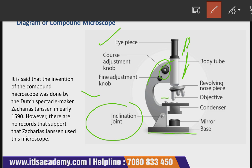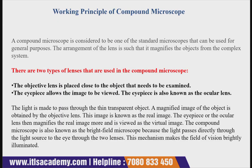The invention of the compound microscope was done by a Dutch spectacle maker, Zacharias Janssen, in the early 1590s. However, there are no records that support that Janssen actually used this microscope - he invented it, but there are no studies claiming he used it.